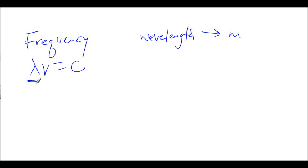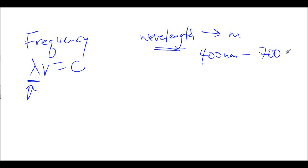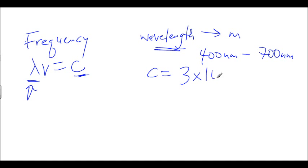Lambda is pretty much our wavelength — the actual wavelength of whatever we're trying to find. A lot of times if you're looking at wavelengths, especially for visible light, where they lie between 400 nanometers to about 700 nanometers, we want to convert them to meters. The reason is that c is a very important universal physics constant — the speed of light in a vacuum — and its value is 3 times 10 to the power of 8 meters per second.